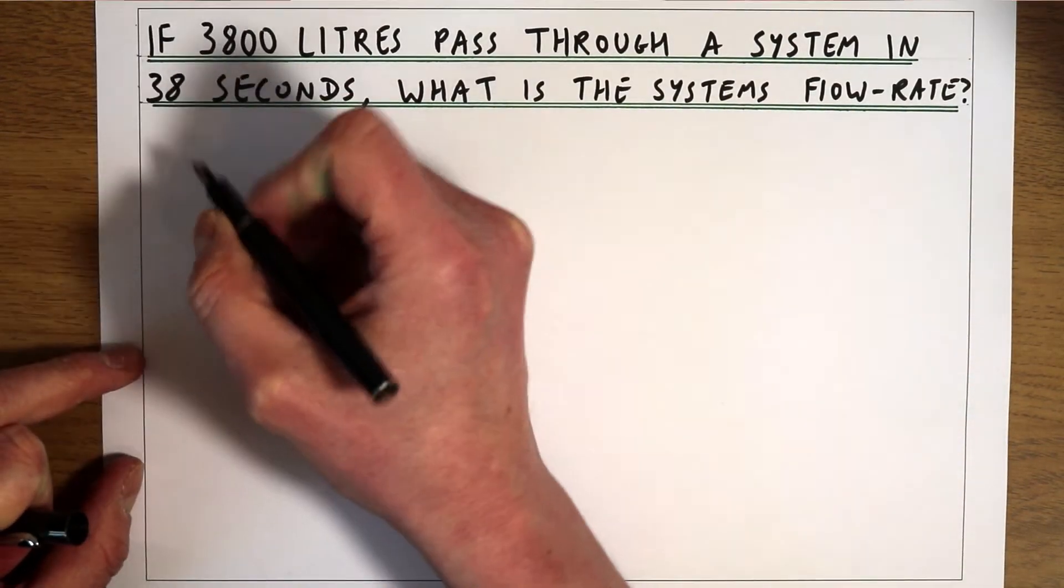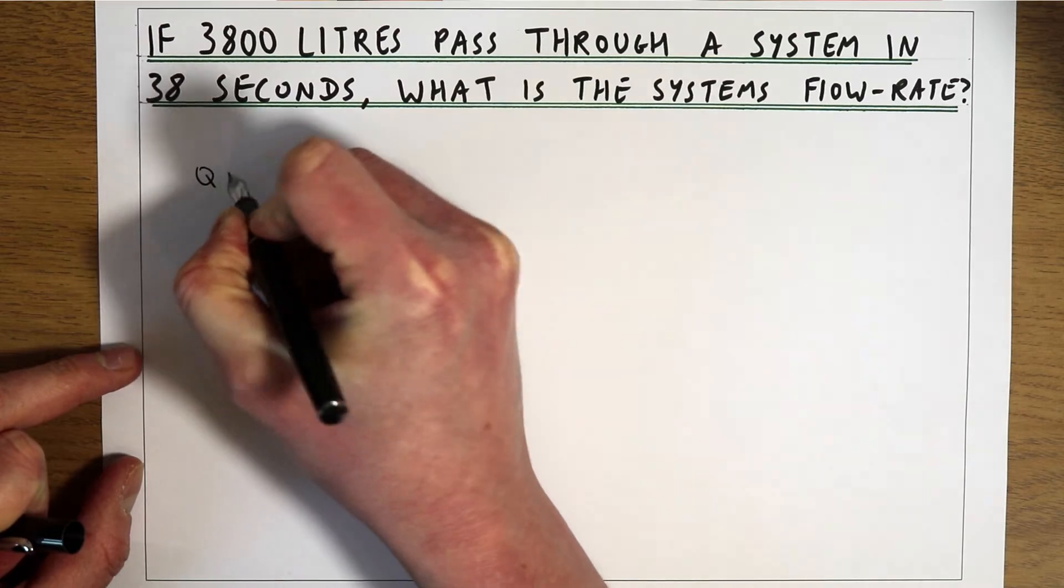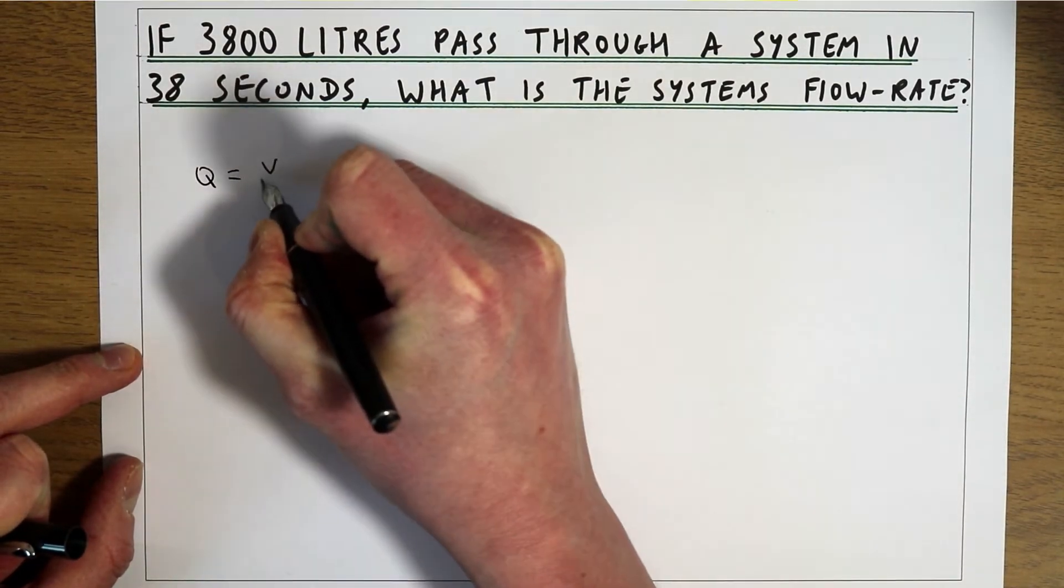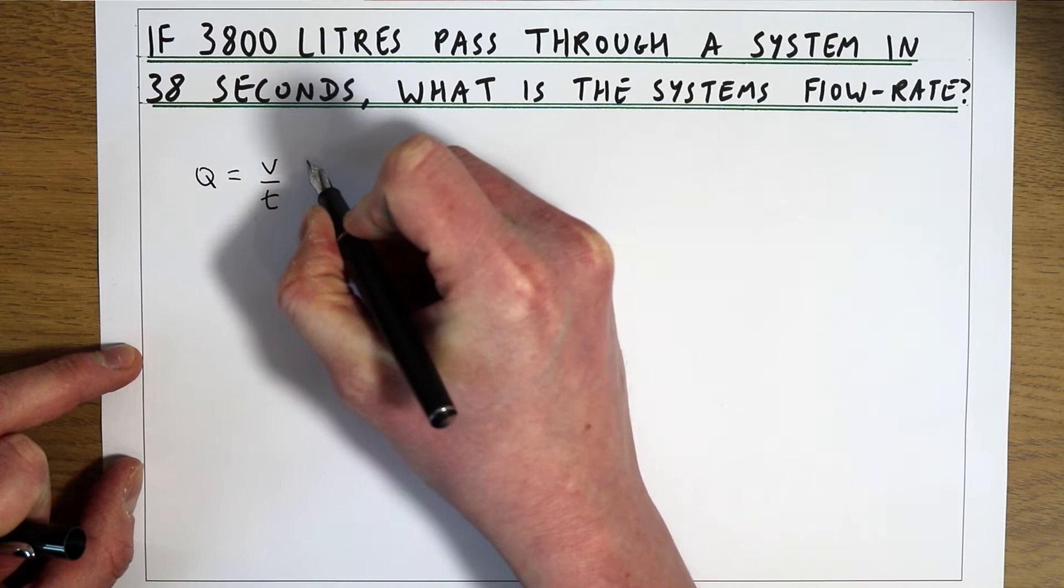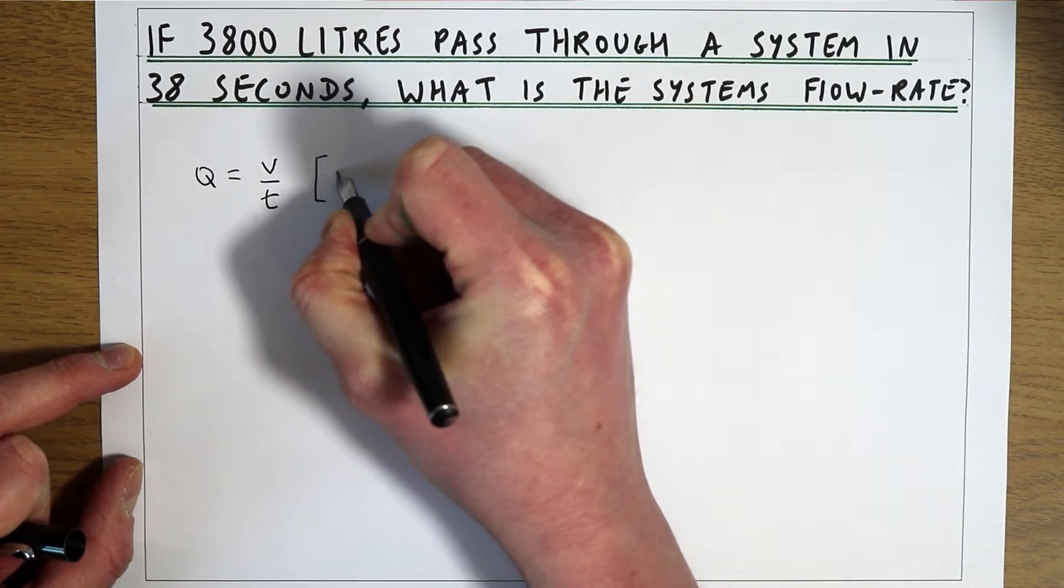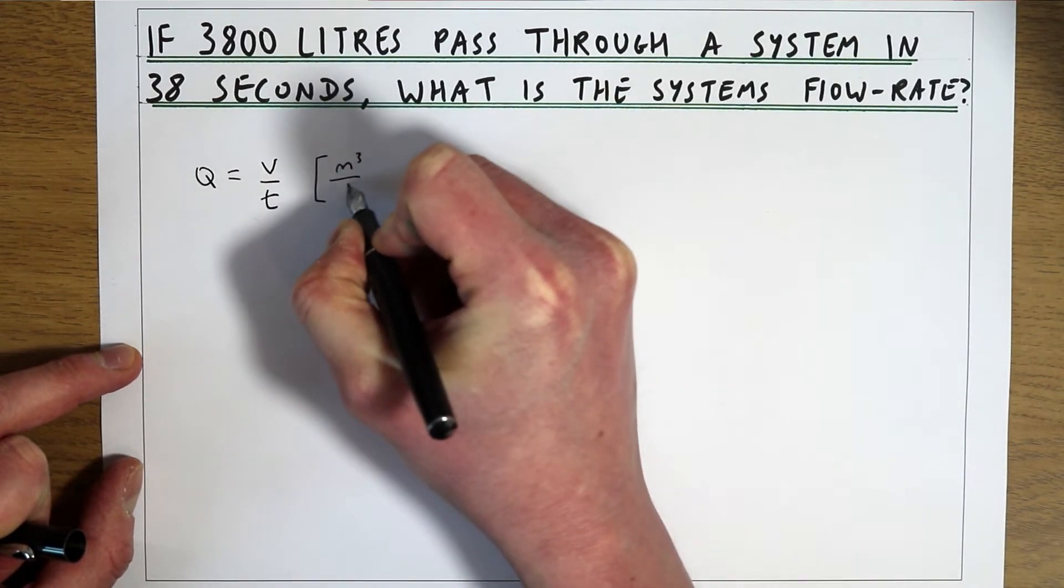The definition of the flow rate Q is volume per unit time and in SI units that would be metres cubed per second.